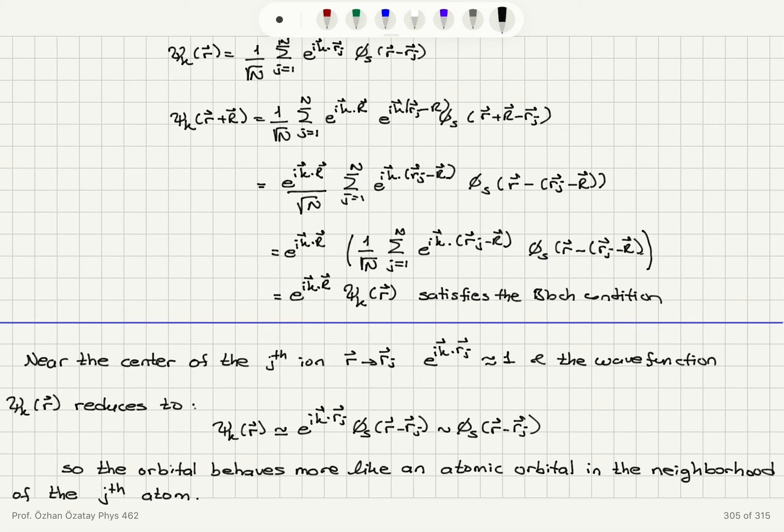so this is going to be an oscillatory probability of finding the electron at position r so as I travel in the lattice so therefore this satisfies the Bloch condition.